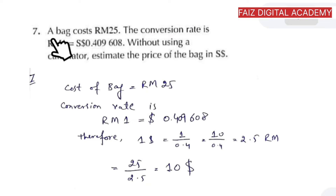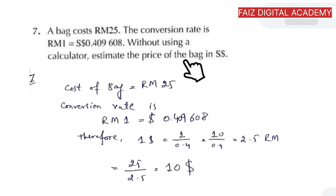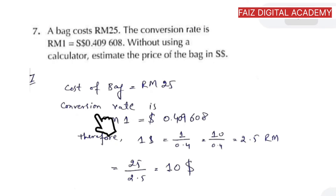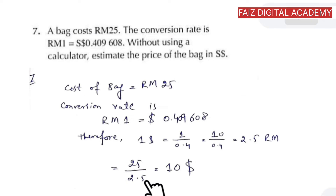In question number seven, a bag costs 25 RM and the conversion rate is 1 USD = 2.40960 RM. Without using a calculator, estimate the price of the bag in US dollars. From the conversion rate we can see that approximately 1 dollar equals 2.5 RM. The bag costs 25 RM, so dividing by 2.5 gives an estimated price of about 10 US dollars.